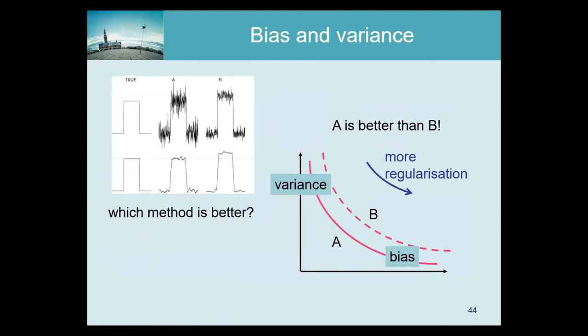There is a lot to say about this. Very often we want to compare algorithms — modeling algorithms, reconstruction algorithms — and typically these algorithms estimate something we want to know. They can do that with bias and variance, or stated otherwise, a systematic error and a random error. If we do it over and over again, the systematic error would always be the same and the random error would always be different.